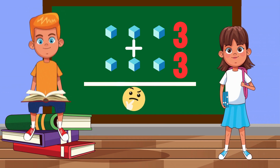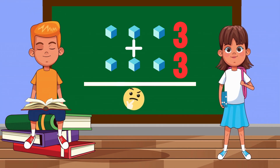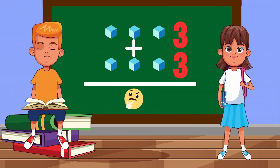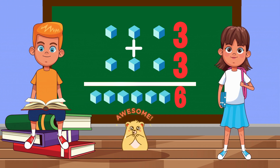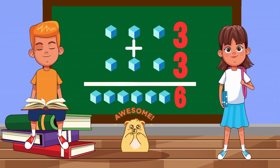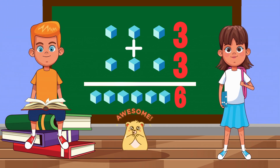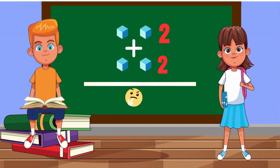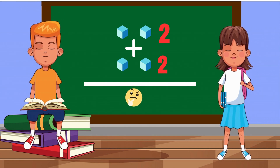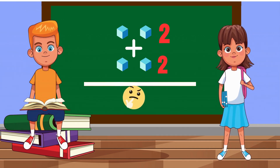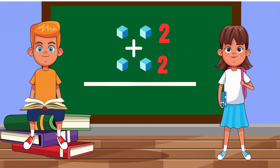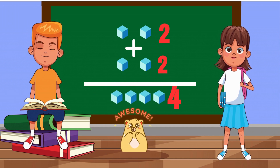Three cubes plus three cubes equals... Six cubes! Two cubes plus two cubes equals... Four cubes!